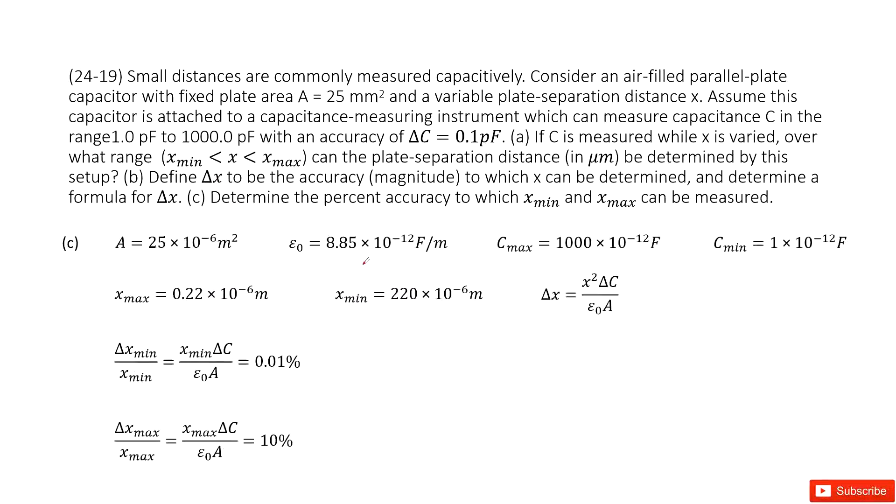Next one determines the percent accuracy to which x min and x max can be measured. So this is the function we just found. Now if we want to find the accuracy with x min, that means we use delta x min over x min. We input the delta x min inside, get function look like this one. Input all the given quantities, get answer there.